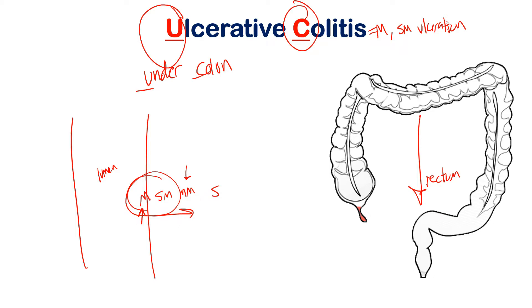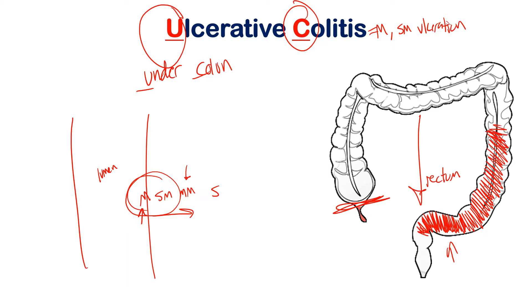Another important thing to know is that the damage must always start at the rectum area, and it is continuous damage — meaning it won't skip an area. There won't be a little inflammation, then a healthy section, then more inflammation. The damage of ulcerative colitis must start at the rectum and proceeds farther up the bowel in a continuous fashion. Also critically, the damage can never pass into the small intestine — it can only cover the entire area of the colon. That's a really important distinguishing factor versus Crohn's disease.